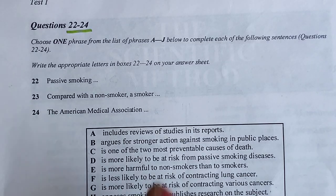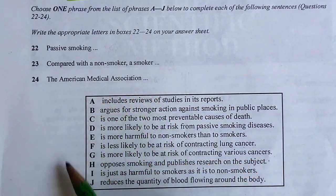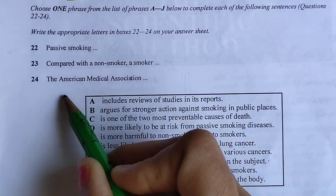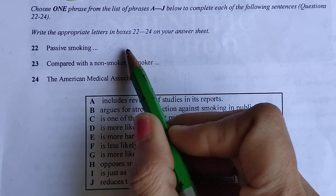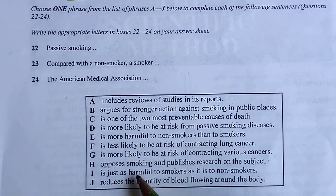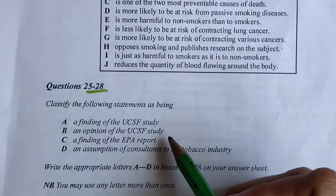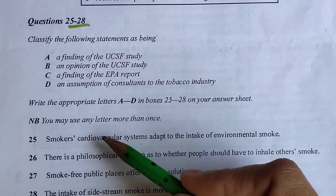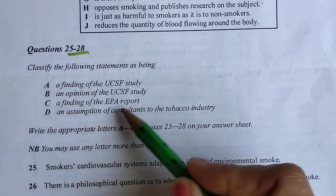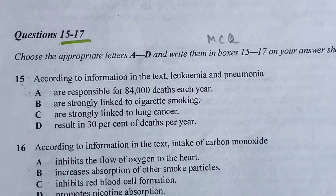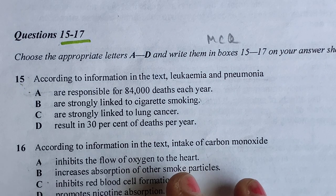They have given some statements you have to match with given options — selecting appropriate letters from boxes in front of the questions. The next type is again similar: they have given statements and we have to match them with studies. Now for the first type of question, we will start reading from the first paragraph, because they have given three MCQs.